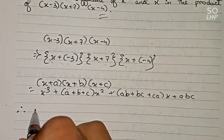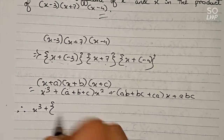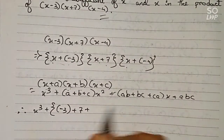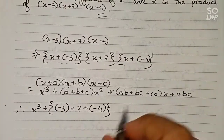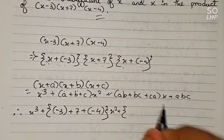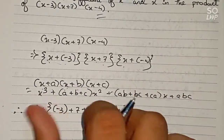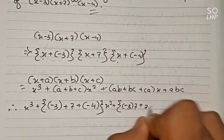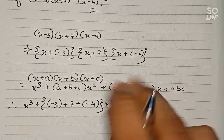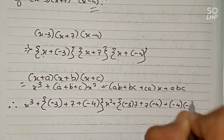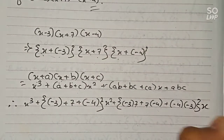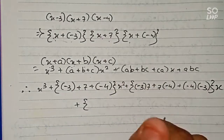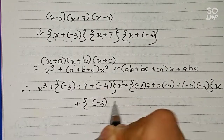Substituting the values: x cubed plus (minus 3 plus 7 plus minus 4) times x squared, plus (minus 3 times 7 plus 7 times minus 4 plus minus 4 times minus 3) times x, plus (minus 3 times 7 times minus 4).